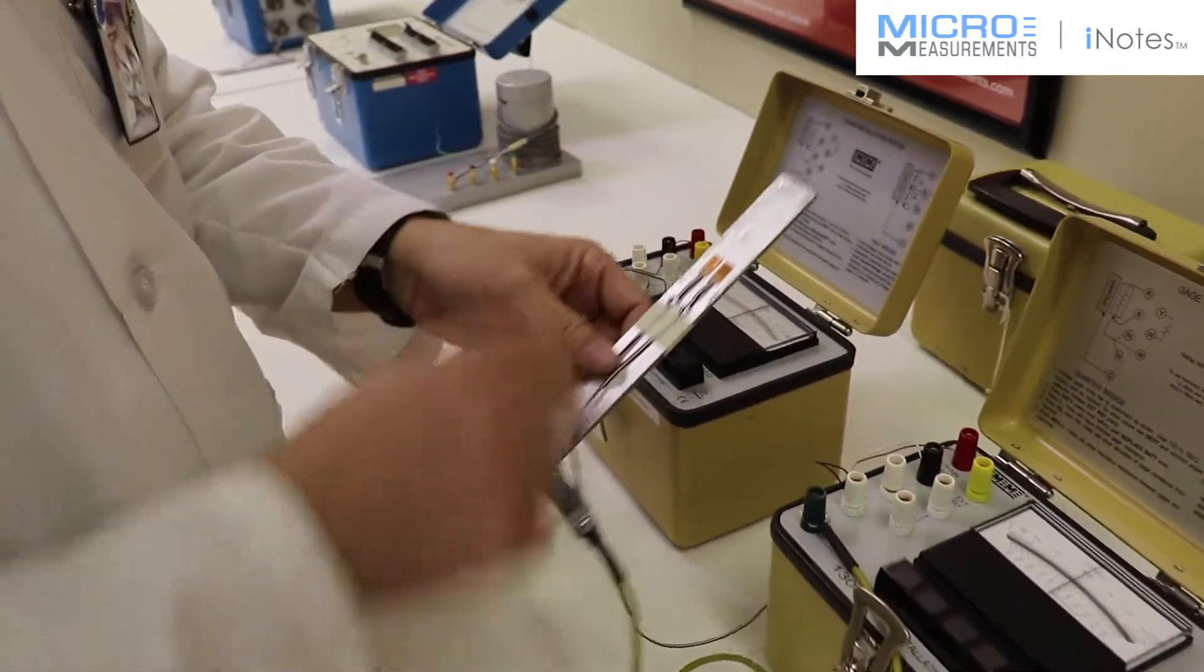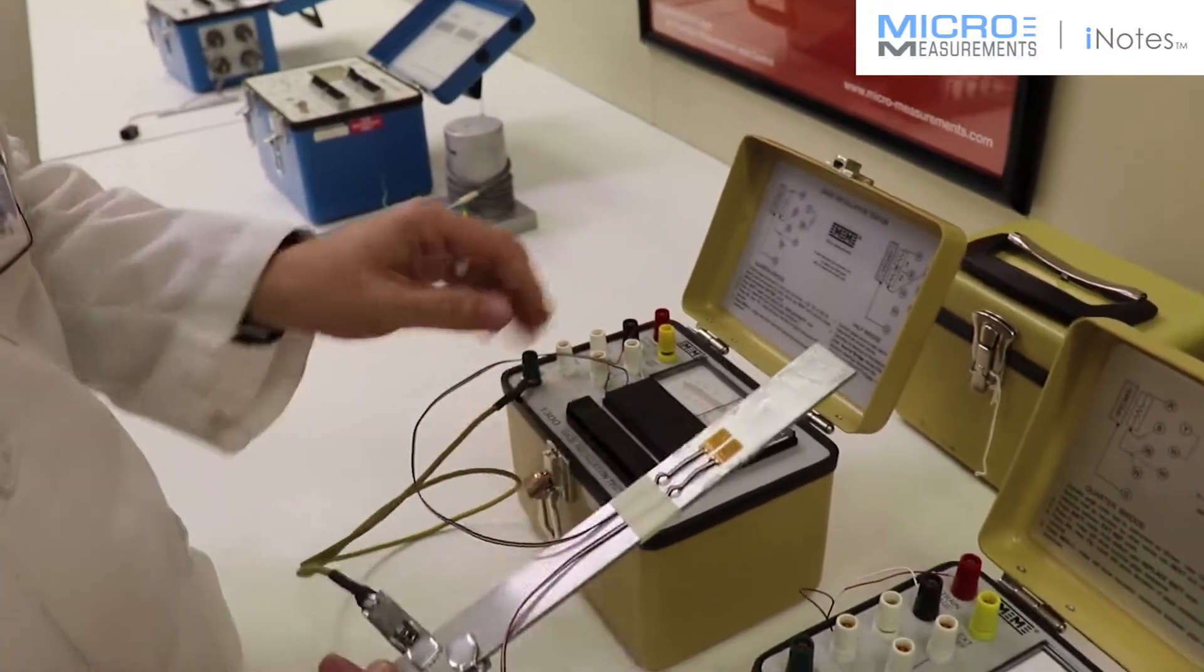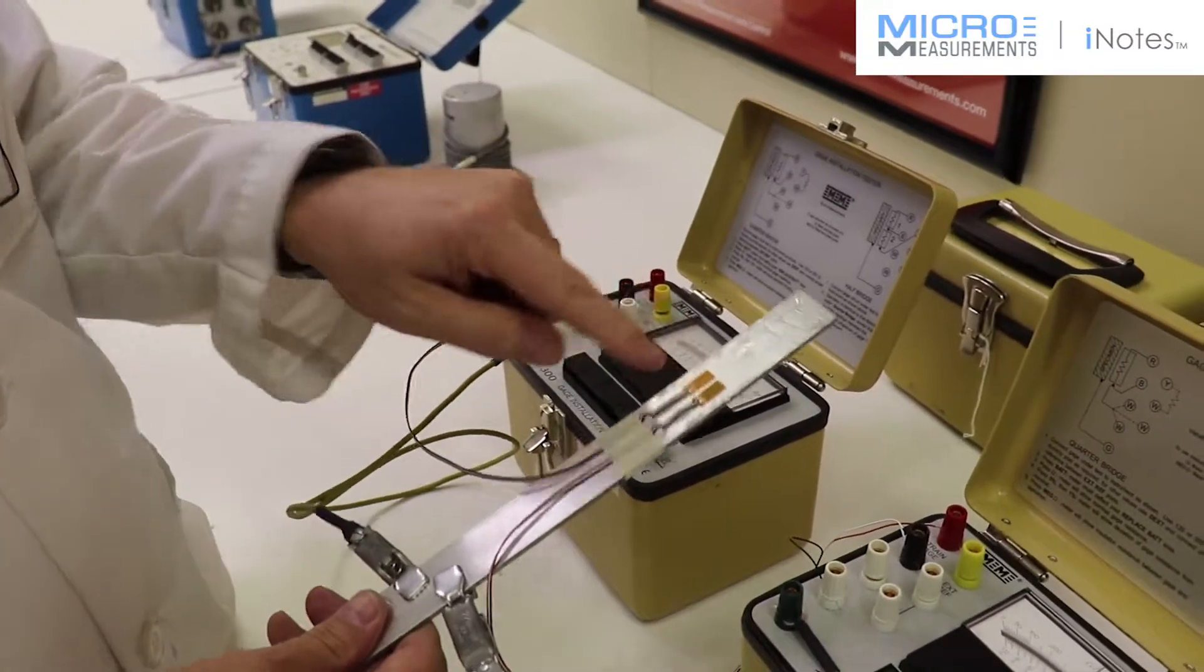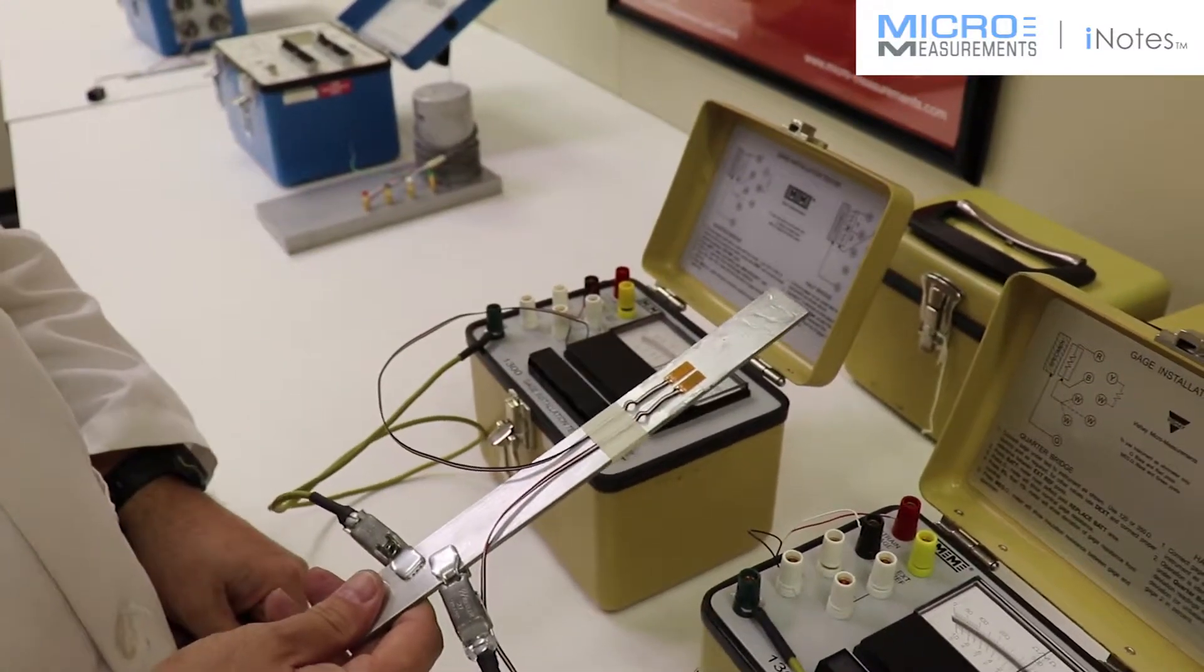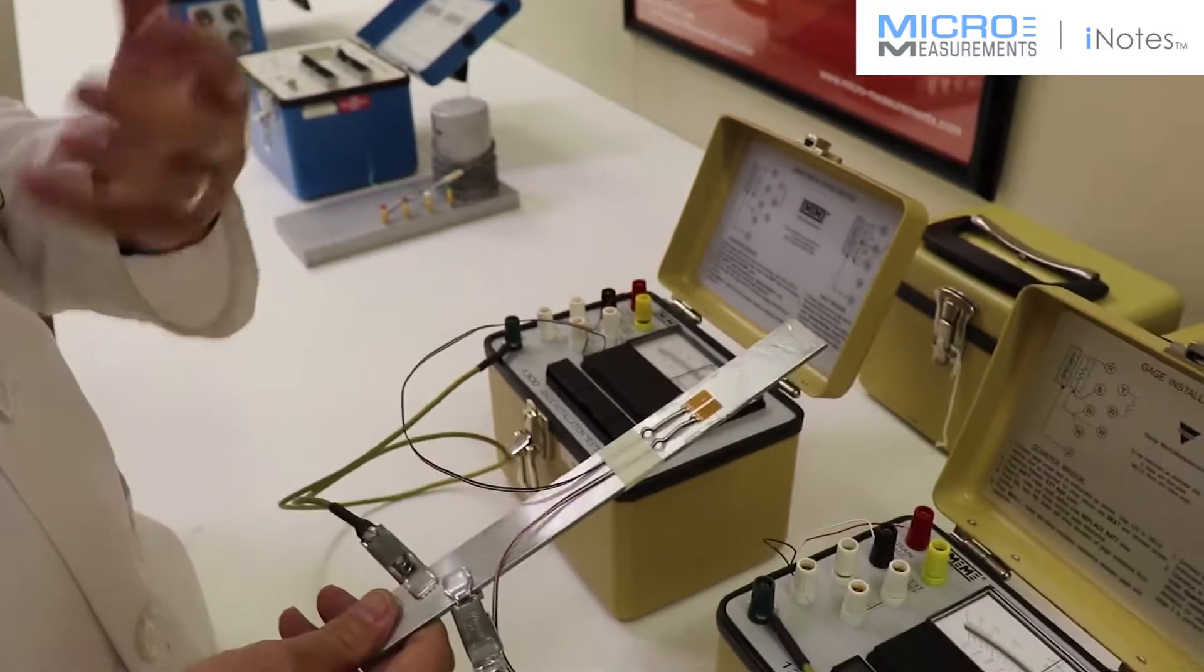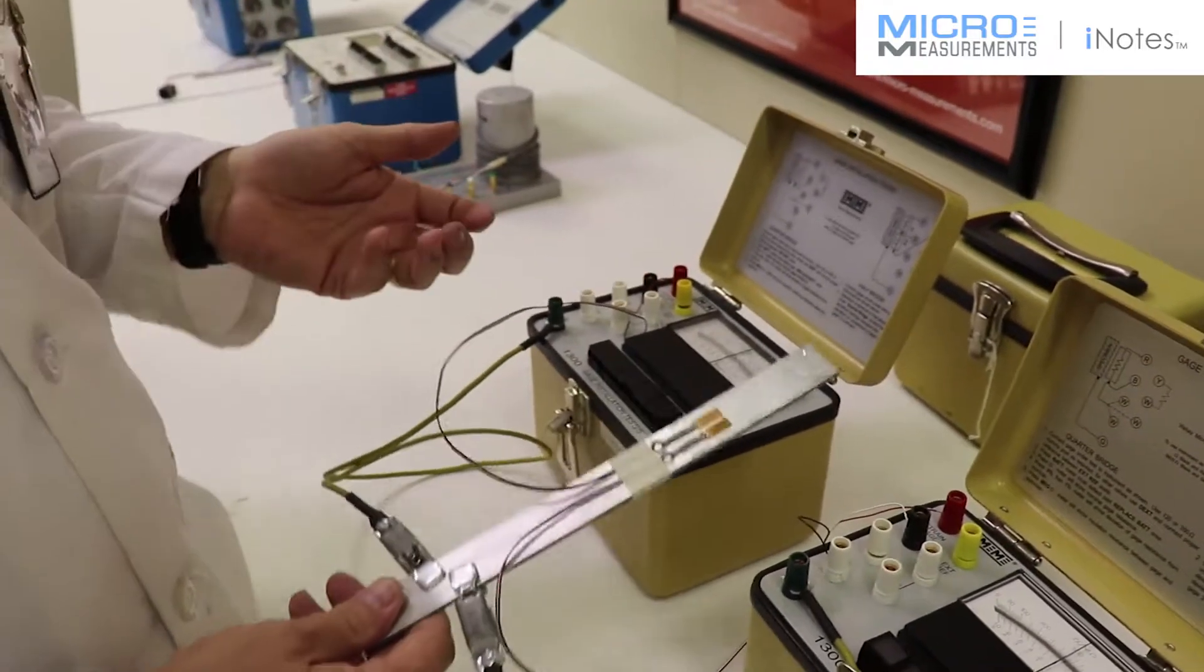Okay, so we've got both strain gauges installed on the aluminum beam and now I've connected each one of them into the gauge installation testers. What this will verify is the electrical integrity of the circuit.